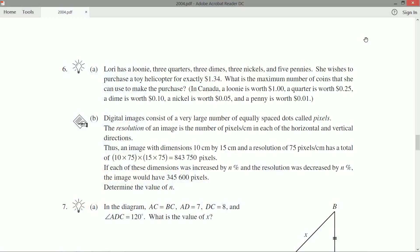All right. Digital images consist of a very large number of equally spaced dots called pixels. In fact, if you're watching this on a monitor, you are using pixels in some way as well. The resolution of an image is the number of pixels per centimeter in each of the horizontal and vertical directions. Thus, an image with dimensions 10 centimeter by 15 centimeter and a resolution of 75 pixels per centimeter has a total of 10 times 75, times 15 times 75, giving us a total number of 843,750 pixels. If each of these dimensions was increased by n percent and the resolution was decreased by n percent, the image would have 345,600 pixels. Determine the value of n.